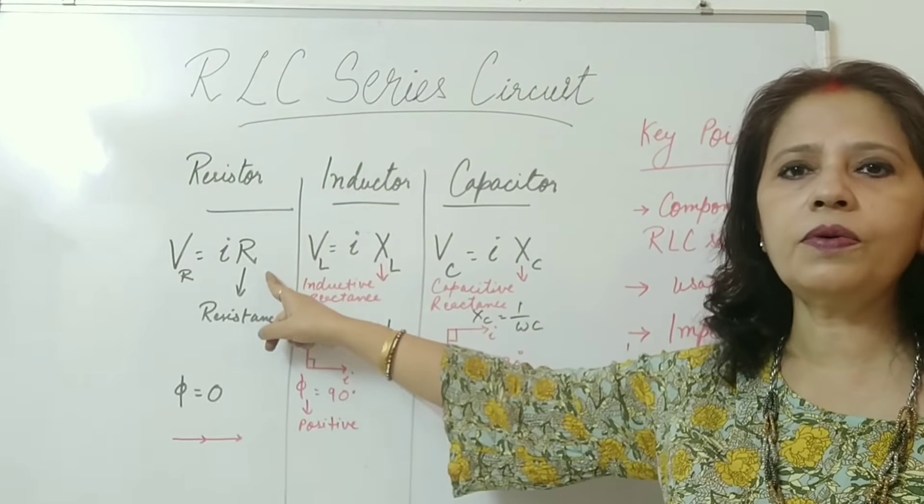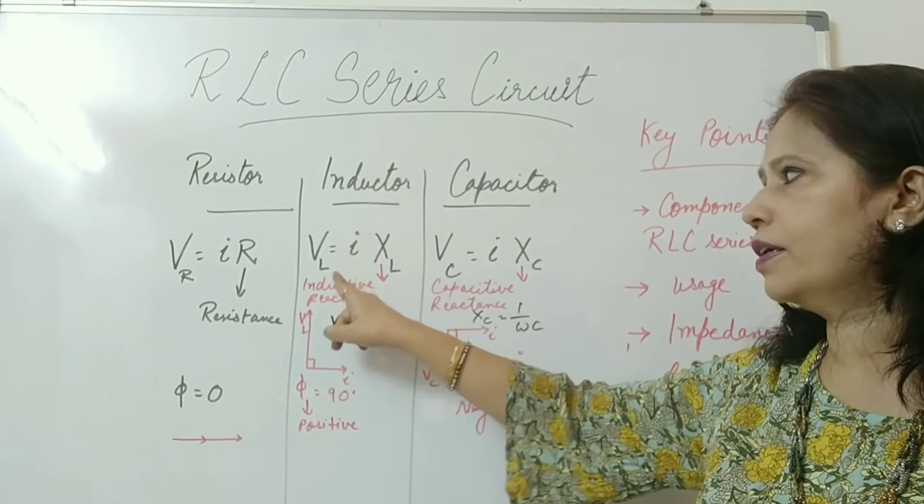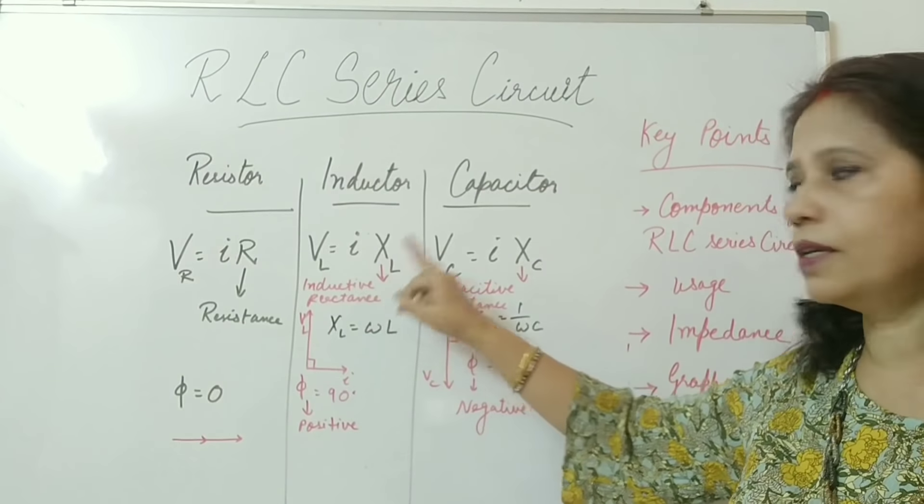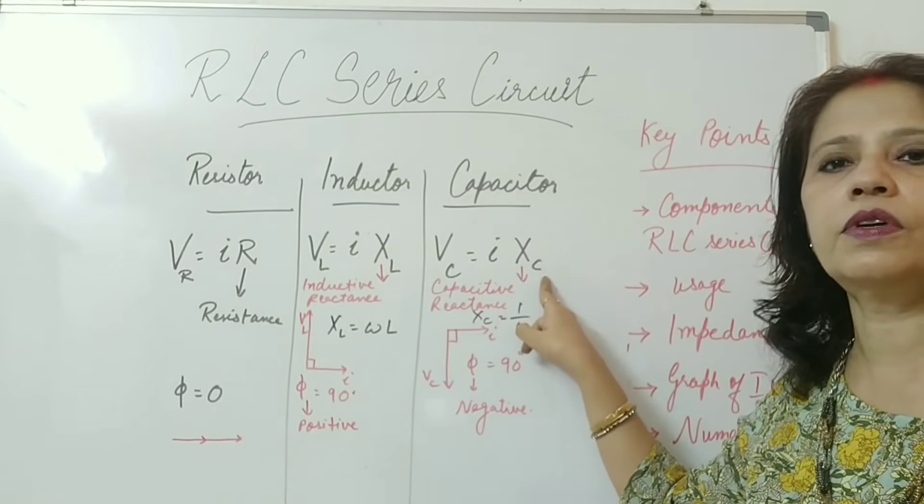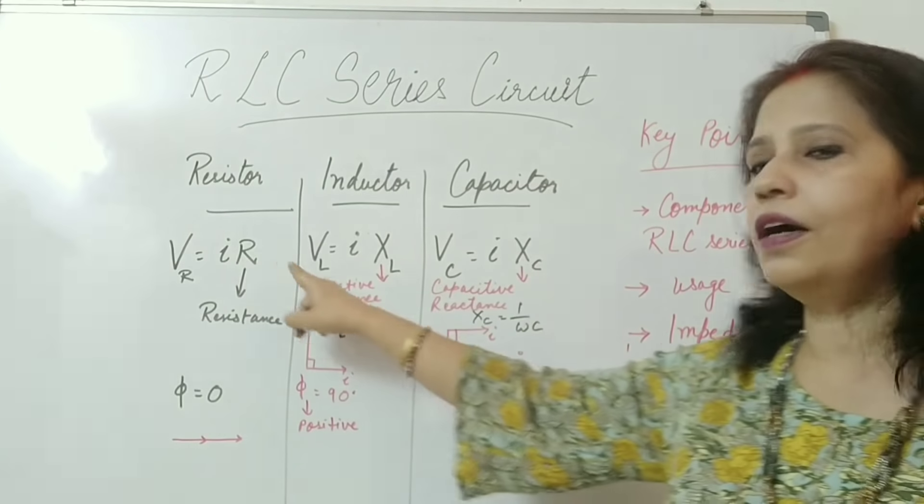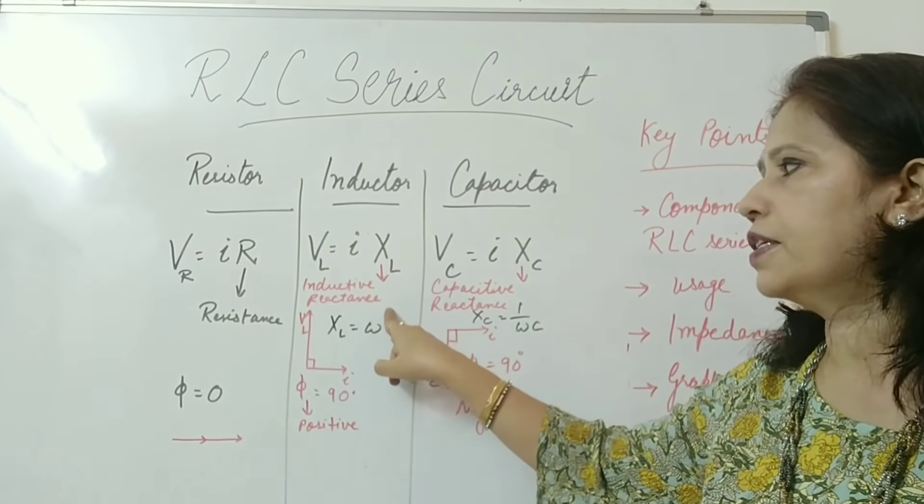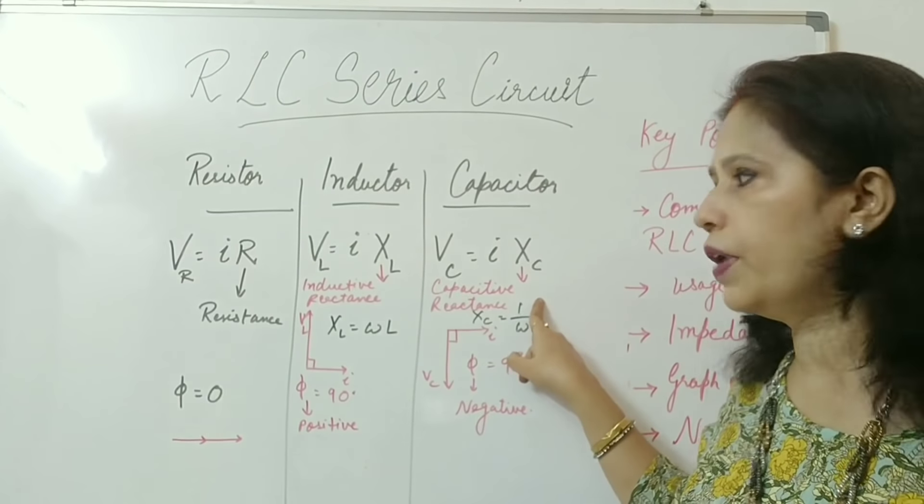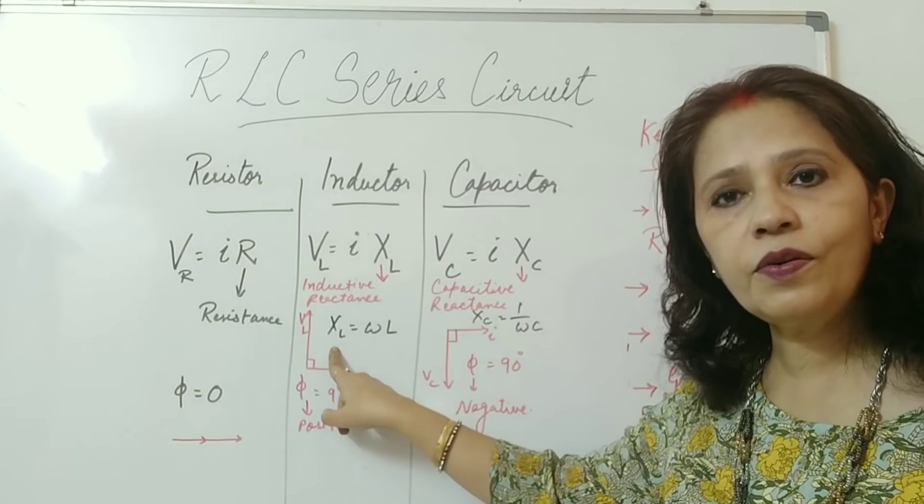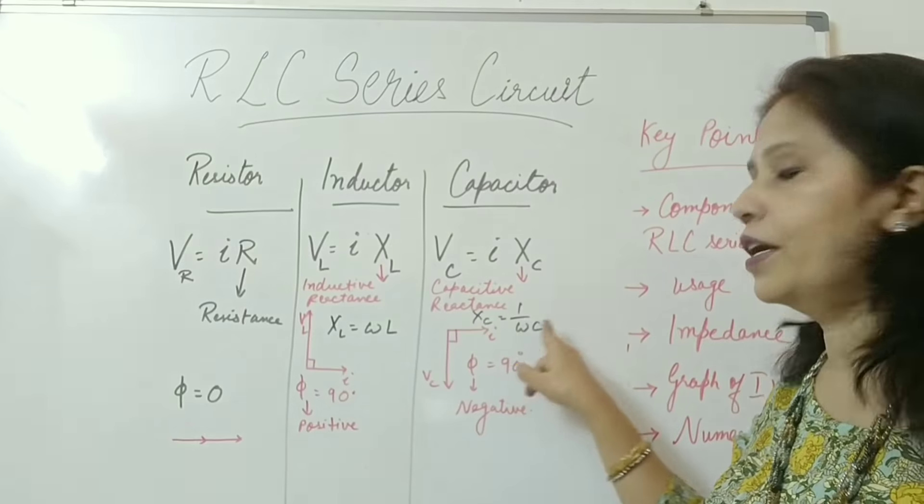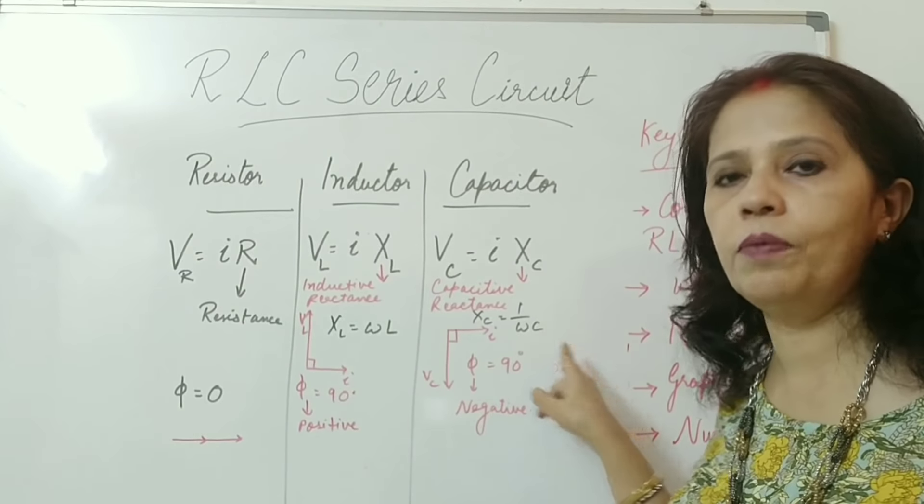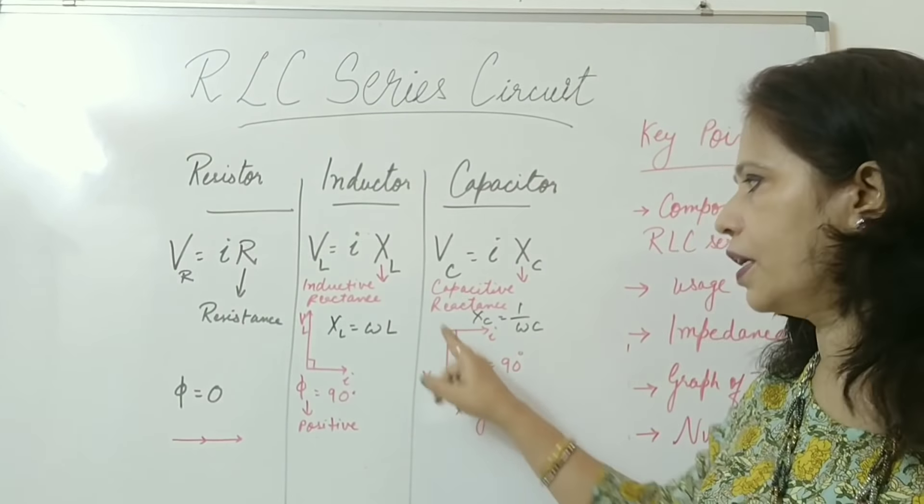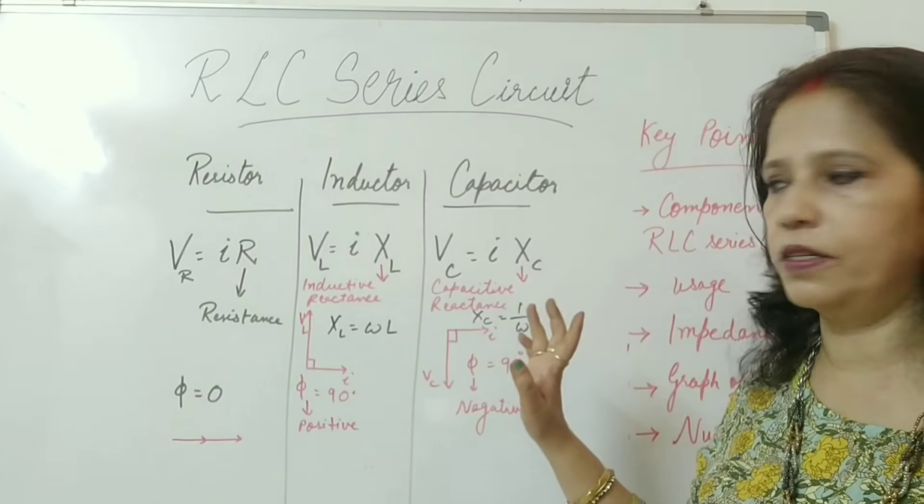Now let us see the voltage in each of these components. For resistor, VR equals to IR. For inductor, VL equals to IXL. For capacitor, VC is equal to IXC. R is of course resistance. XL is your inductive reactance. XC is your capacitive reactance. And XL equals to omega L. XC equals to 1 upon omega C. Omega being the angular frequency. L is the inductance and C is the capacitor.